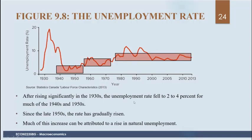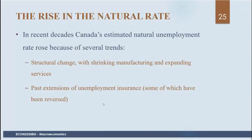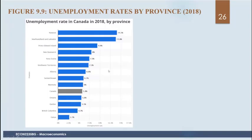In recent decades, Canada's estimated natural unemployment rate has increased because of several trends: structural change due to shrinking manufacturing and expanding services, extensions of unemployment insurance, and higher minimum wages in some provinces. The unemployment rate also varies a lot across provinces — Newfoundland has the highest unemployment rate, Ontario is one of the lower ones, and eastern provinces tend to have higher rates.